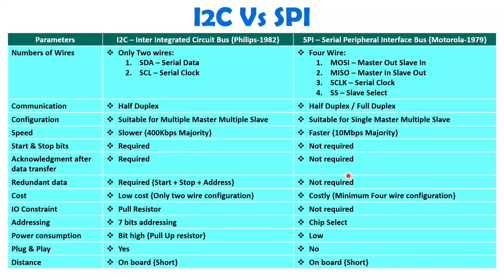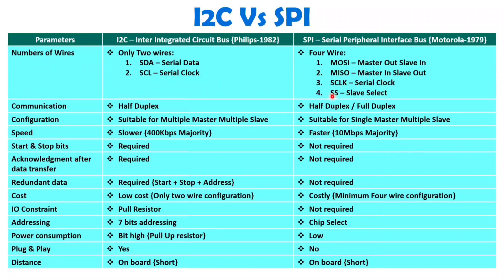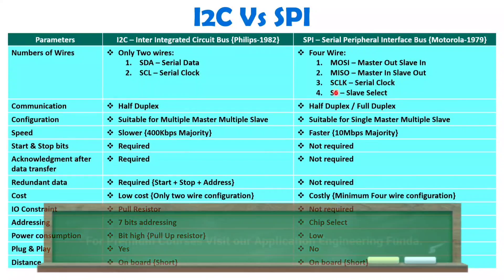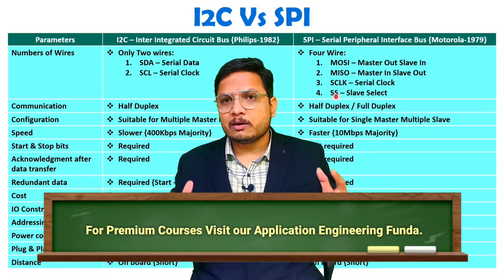In summary, for high-bandwidth communication, SPI is better. For full-duplex mode communication, SPI is better. When it comes to cost, I2C is better. When you have multiple devices, I2C is better. But when there are many devices, SPI is no longer practical because you need multiple slave select lines. In that case, it is preferable to go for parallel communication — if you have many wires, what is the use of serial communication? That is the comparison between I2C and SPI protocols.